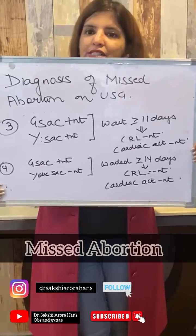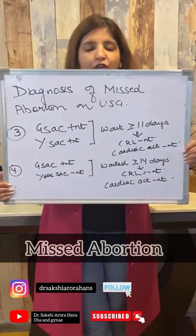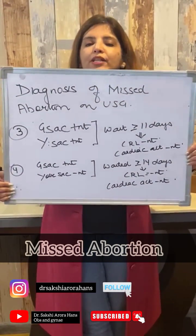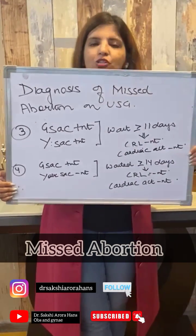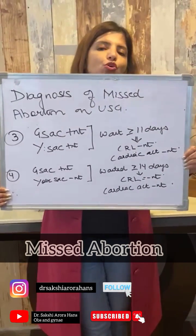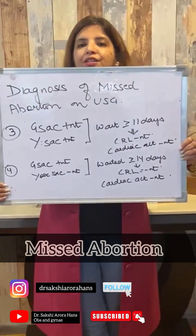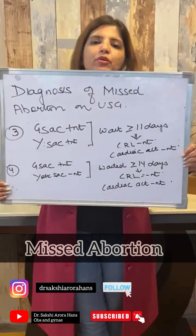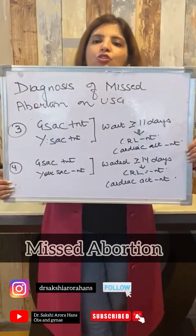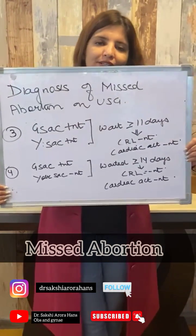Or if on ultrasound a gestational sac is visible, the yolk sac is not visible, and you have waited for a period of more than or equal to 14 days and still you are not getting any fetal poles or cardiac activity, then that indicates missed abortion. Please remember all these four methods of diagnosing missed abortion on ultrasound.